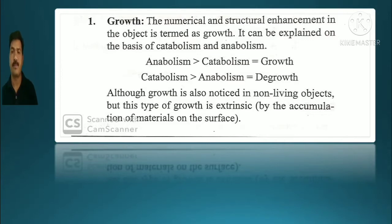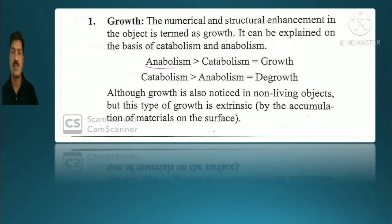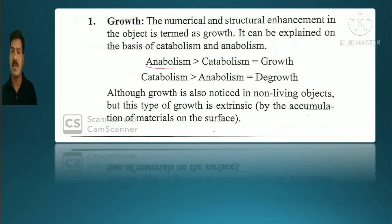Growth can be explained on the basis of catabolism and anabolism. Anabolism means energy construction — like what you eat is stored in your body, utilized for your growth. The cellular mass increases and cells start to divide. That is called anabolism.